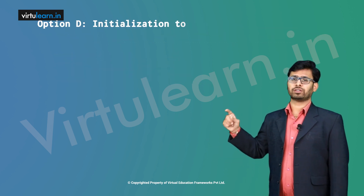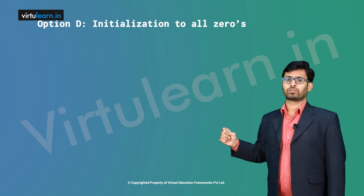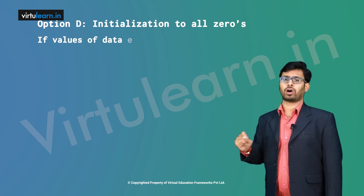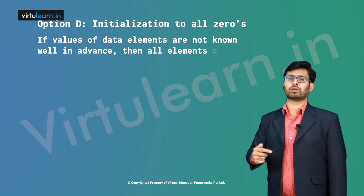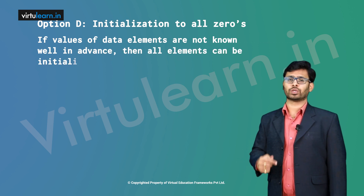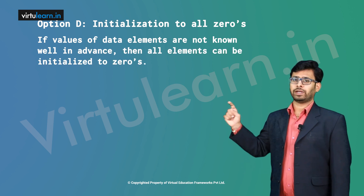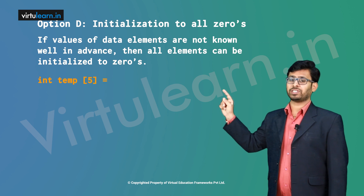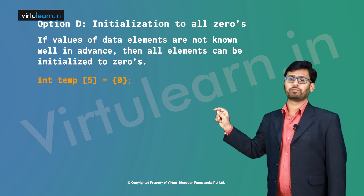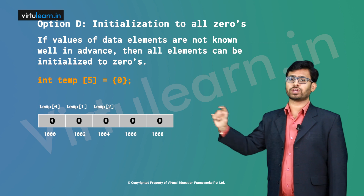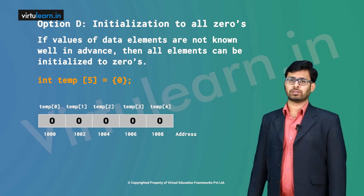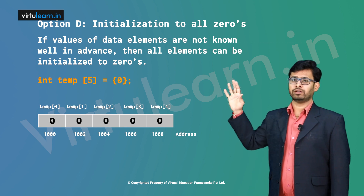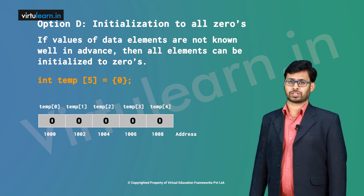Option D is initializing to all zeros. If the values of data elements are not known in advance, all the elements can be initialized to 0. For example: int temp[5] = {0}. This means all 5 locations will be allocated with zeros. This is how we write the different ways of initialization.